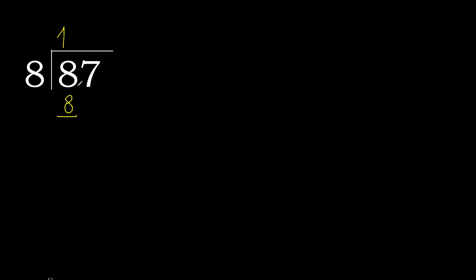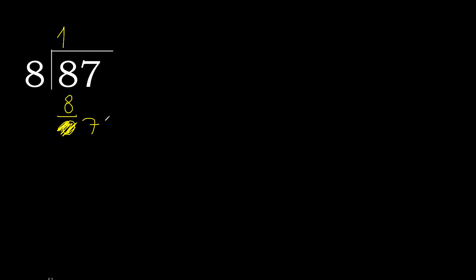OK. 8 minus 8 is 0. Next, bring down — eliminate 0, bring down 7. 7 is less than 8, therefore next. That is not a number, therefore complete.